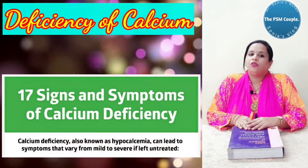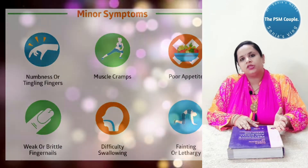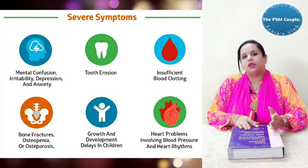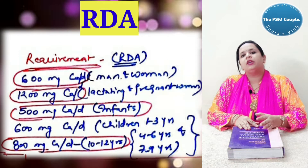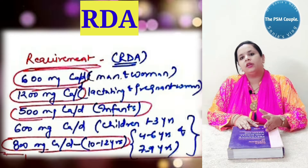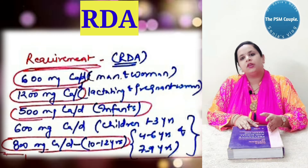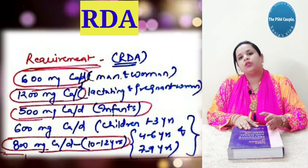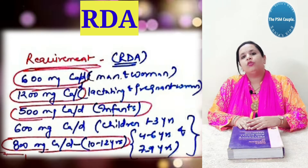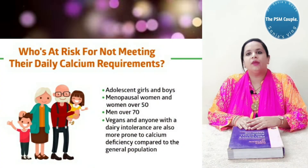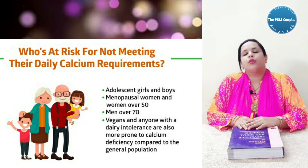Deficiency of calcium causes the same as vitamin D deficiency, that is rickets in children and osteomalacia in adults. The RDA for calcium is 600 milligram per day in men and women, 1200 in lactating and pregnant women, 500 in infants, 600 in age groups 1 to 3, 4 to 6, and 7 to 9, and 800 milligram in children aged 10 to 12 years.